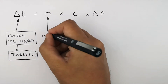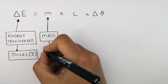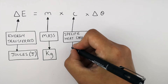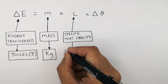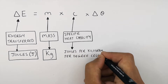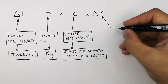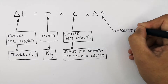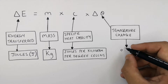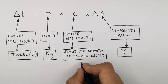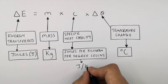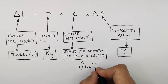M is the mass of the object, and the unit for mass is kilograms. C is the specific heat capacity of the object, and the unit for specific heat capacity is joules per kilogram per degree Celsius. Delta theta is the change in temperature, and the unit for temperature is degrees Celsius. So the unit is written as J per kg per degree Celsius.